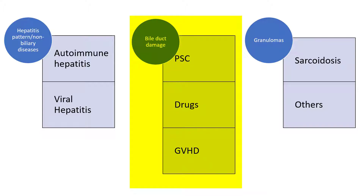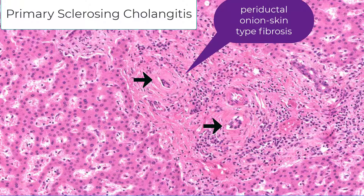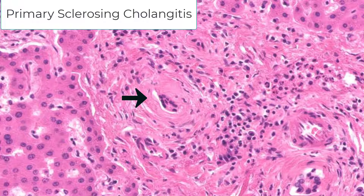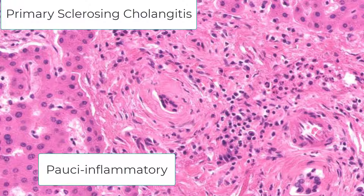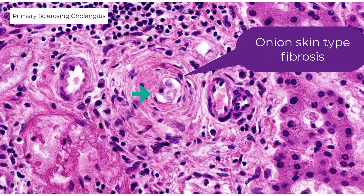The final category is histologic damage to the bile duct. The most discussed in this category is primary sclerosing cholangitis. This is classic PSC — notice the periductal onion-skin type fibrosis. The vast majority of PSC cases will not show this classic onion-skin fibrosis. Also note the damaged bile ducts — these ducts look shriveled up, which is typical of PSC. PSC also tends to be pauci-inflammatory, so you do not see many inflammatory cells in the portal tract, while PBC tends to be much more inflamed. Here's another image of PSC where the bile duct is barely recognizable but the onion-skin fibrosis is present.